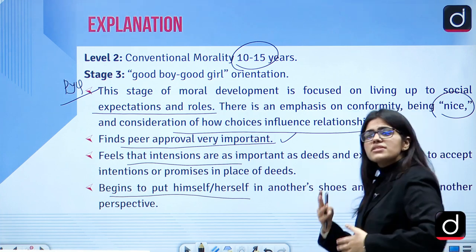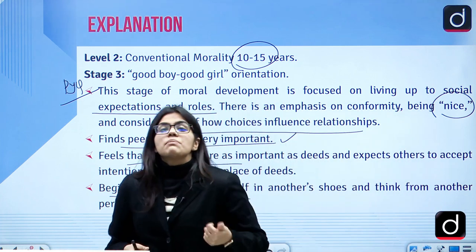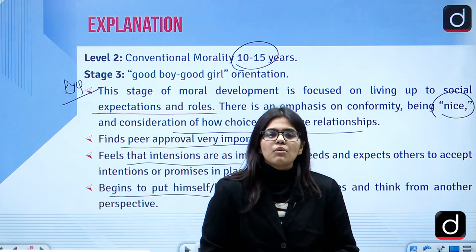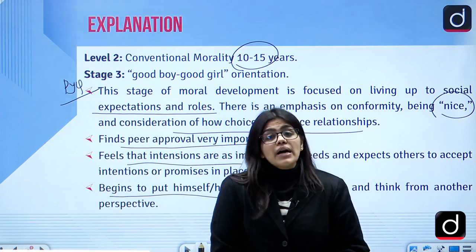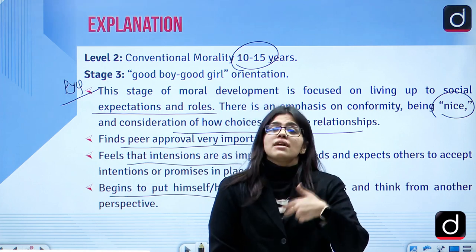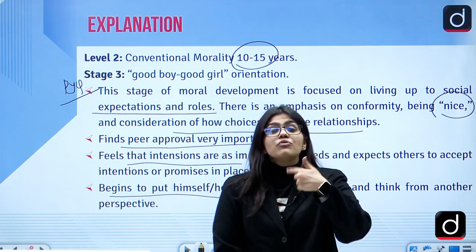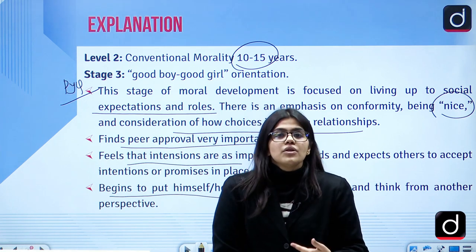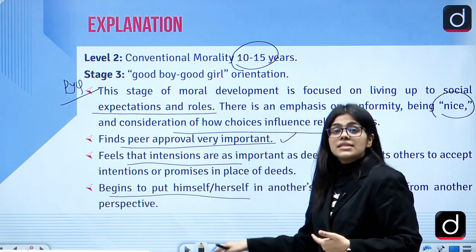At this stage, they also begin to put themselves in the shoes of others to understand what others perceive. That means they develop sympathy and empathy. Sympathy means you know someone is in pain; empathy means you put yourself in their position and understand it would be hurtful. At this stage, you try to be as good as possible.